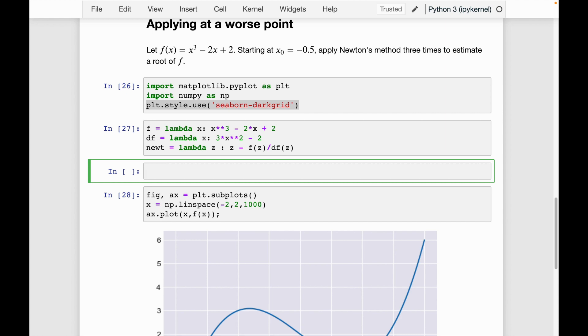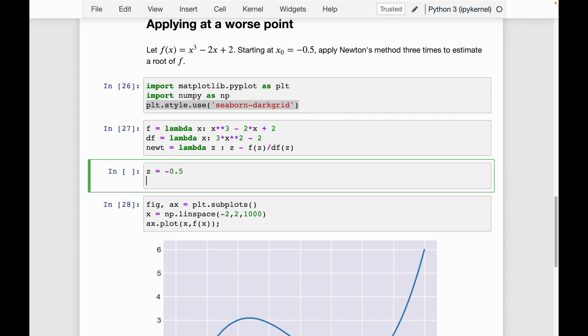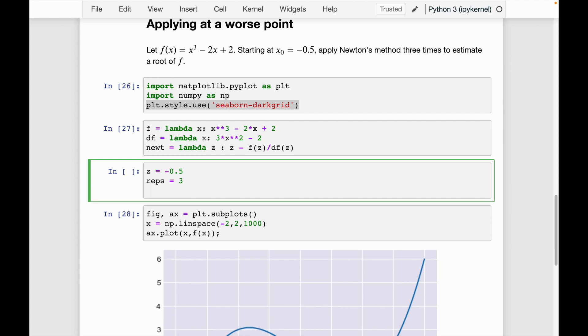I'm going to go a little bit fast in this section just because it's exactly the same as the previous video when we applied it negative 1.5 but now we're just at negative 0.5. So that's our point z. We're still going to do three reps.